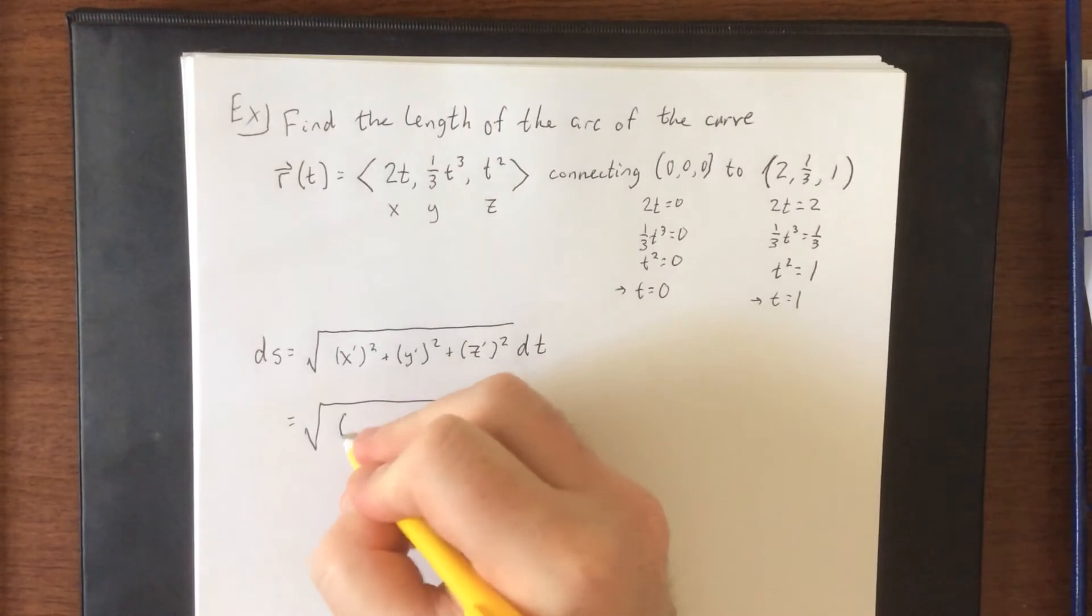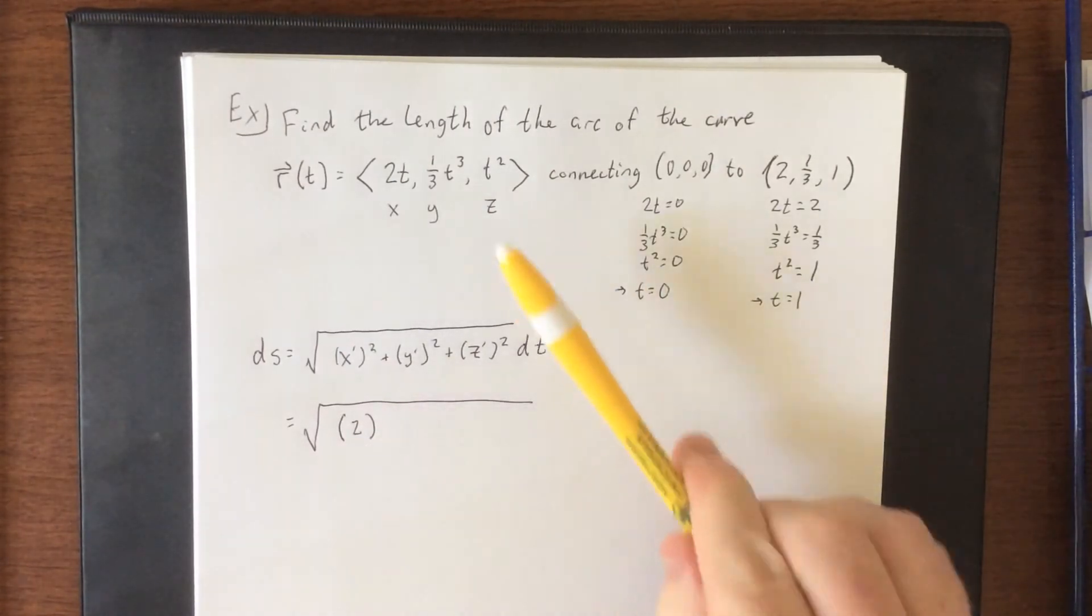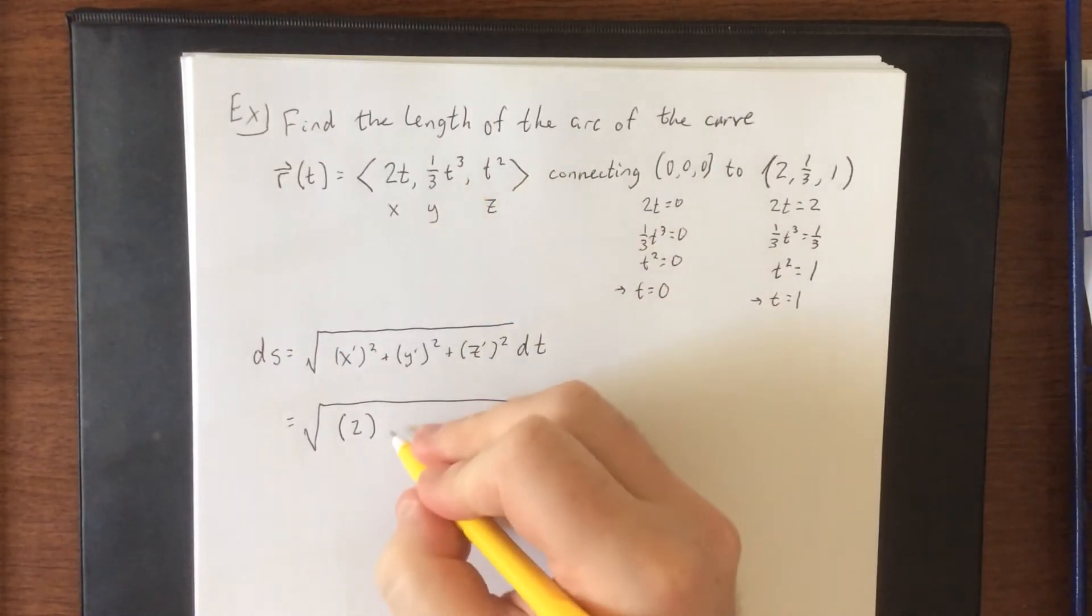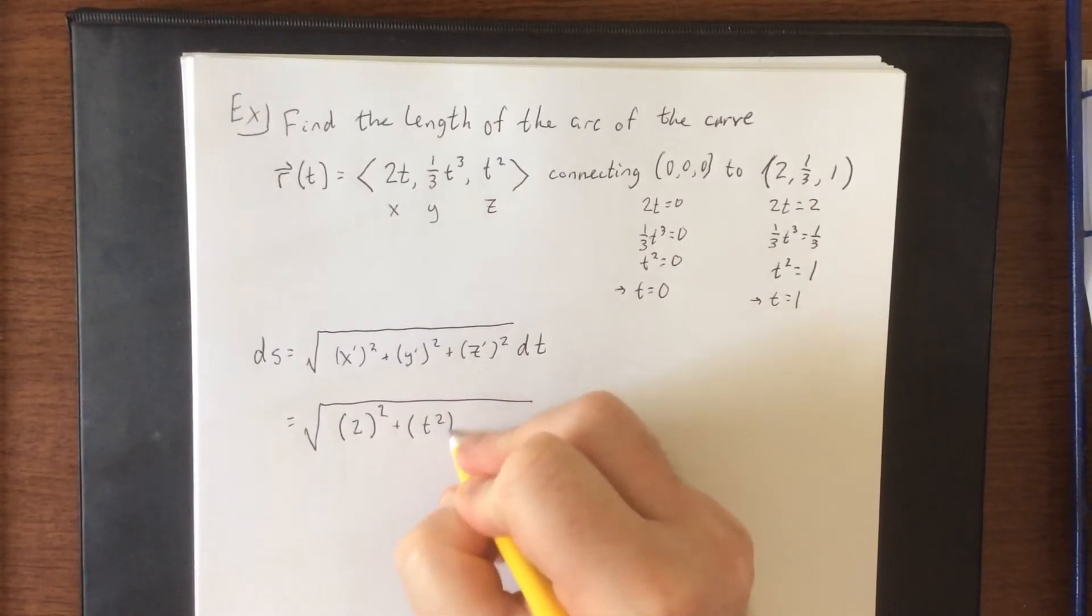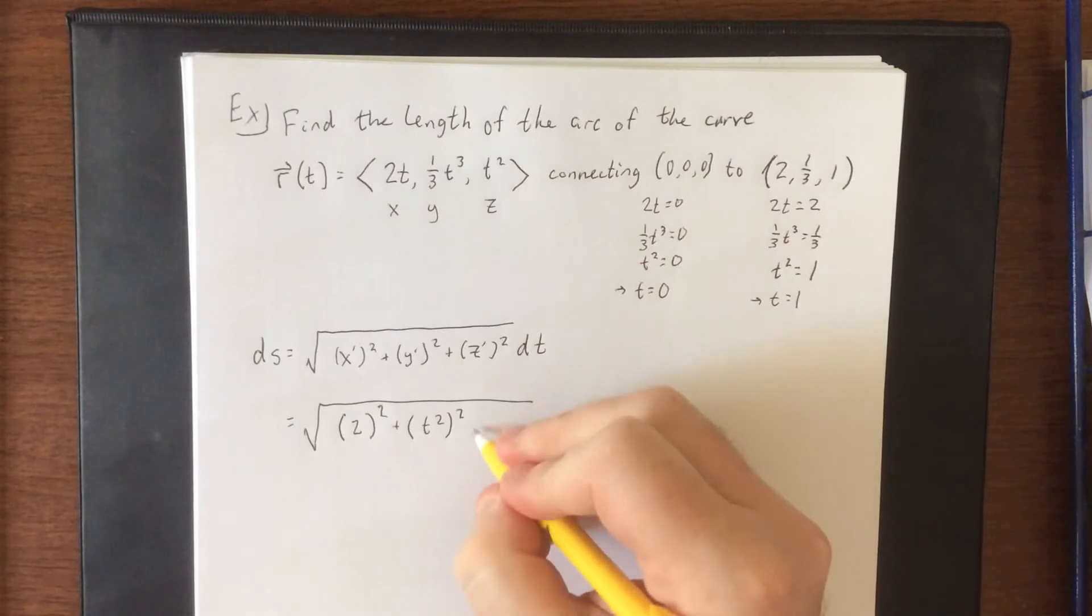Derivative of 2t will be equal to 2. Derivative of one-third t cubed is going to be t squared, and the derivative of t squared will be 2t.